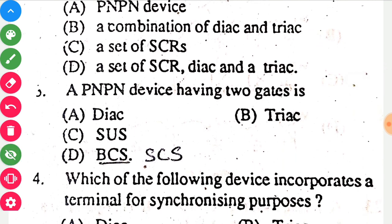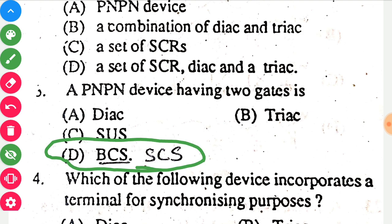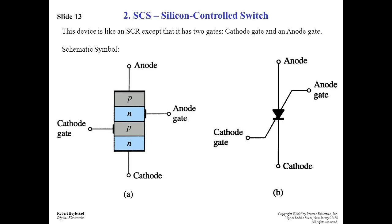A PNPN device having two gates — I am going to go with option D. I think they have mistakenly written BCS instead of SCS, and SCS stands for Silicon Controlled Switch. I have added the diagram of SCS and you can clearly see that it has two gates.